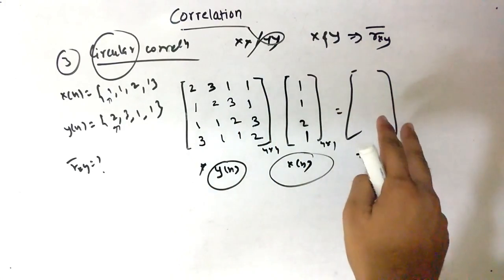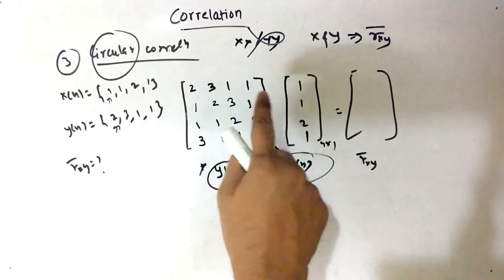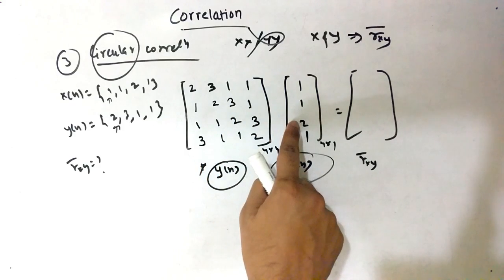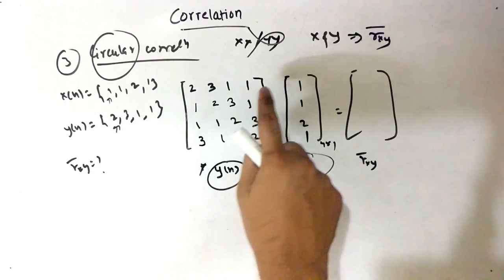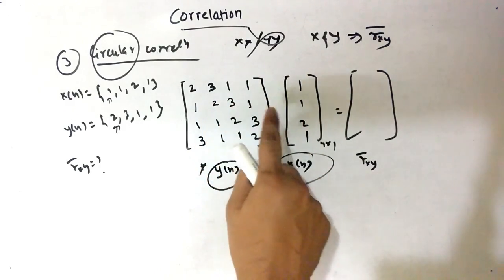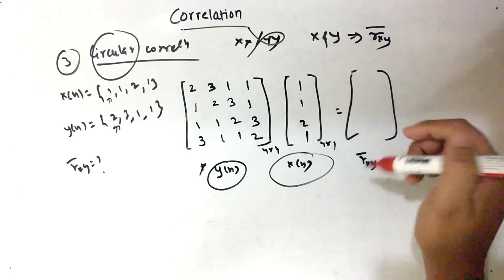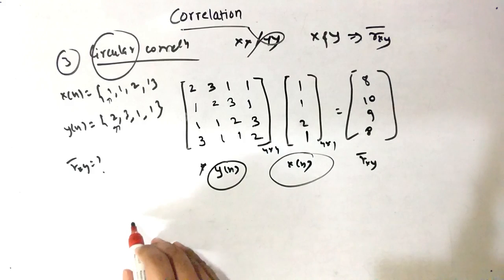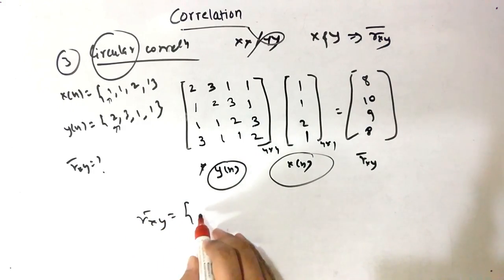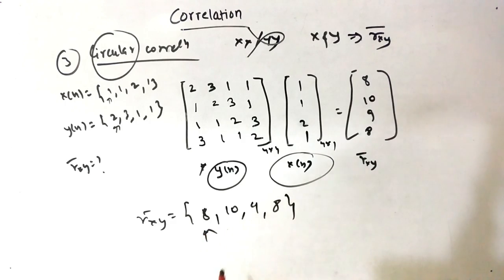Now you have to solve this matrix multiplication. For the first row: 2 into 1 plus 3 into 1 plus 1 into 2 plus 1 into 1. Similarly for the second row: 1 into 1 plus 2 into 1 plus 3 into 2 plus 1 into 1. Solving all rows and filling up the answer, we get: 8, 10, 9, 8. So R_XY overbar equals 8, 10, 9, 8, and our origin is here.